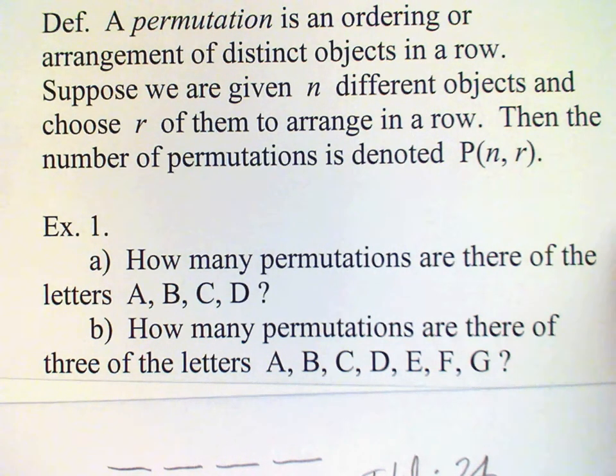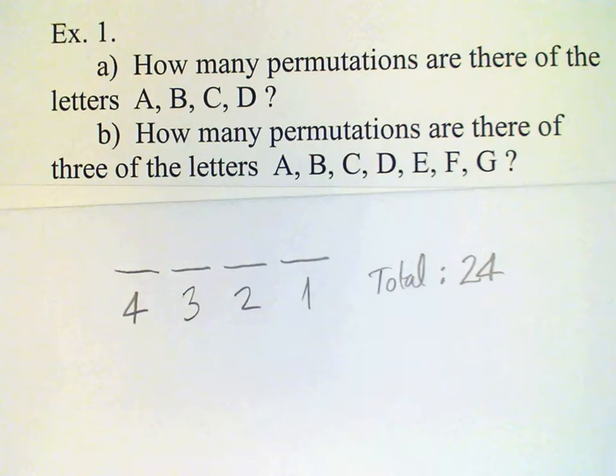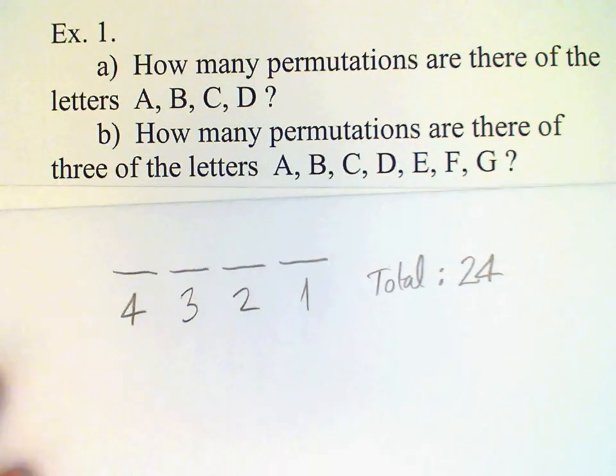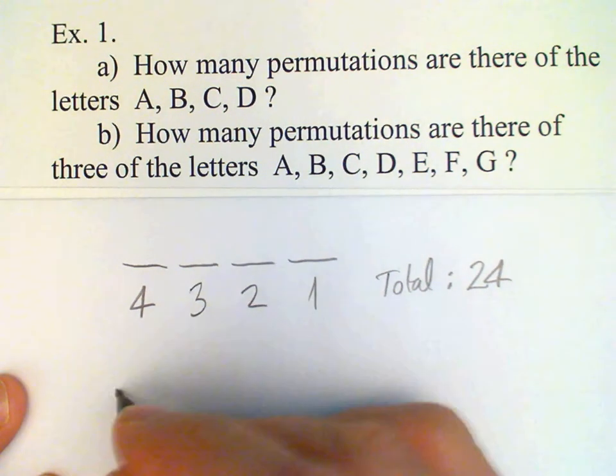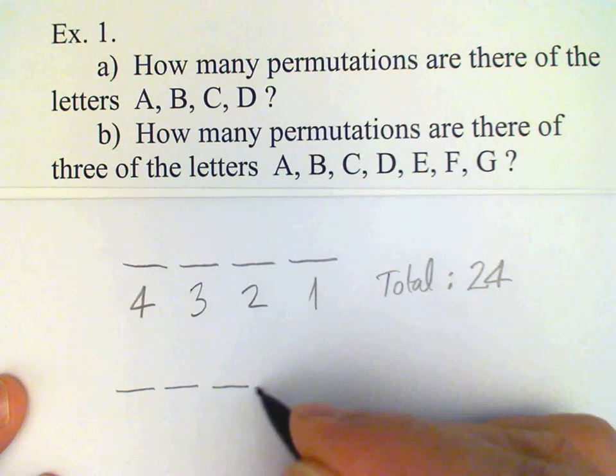Okay so let's extend this idea in case we have seven letters. Suppose we have the letters A, B, C, D, E, F, G. Now how many permutations are there? Well the principle is the same. Only this time instead of just four slots we're going to have seven slots.